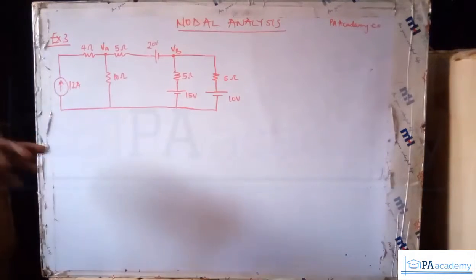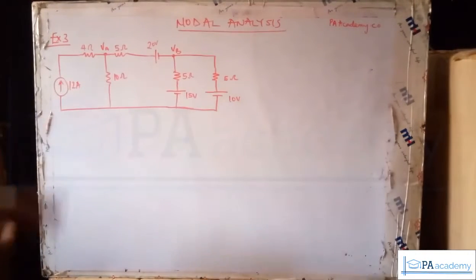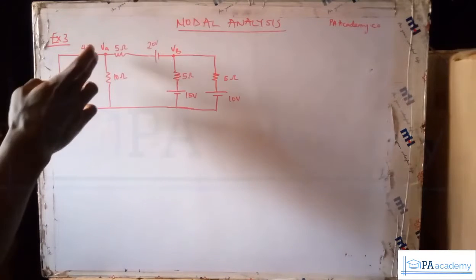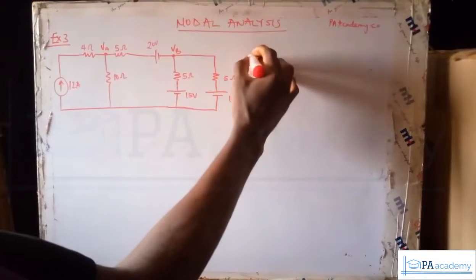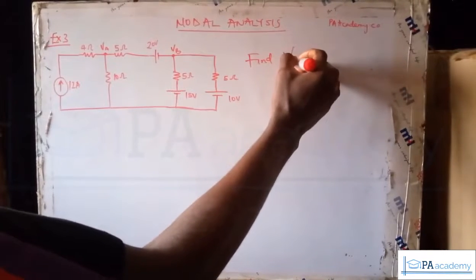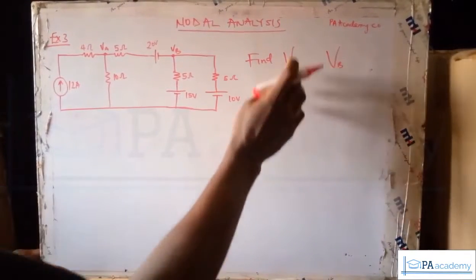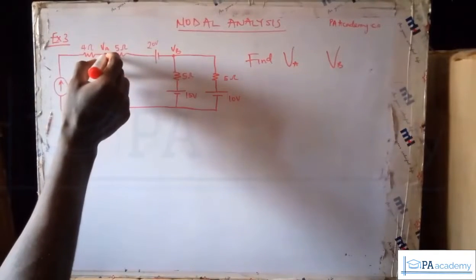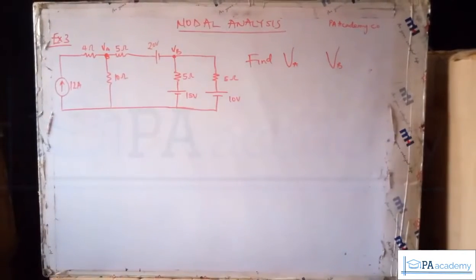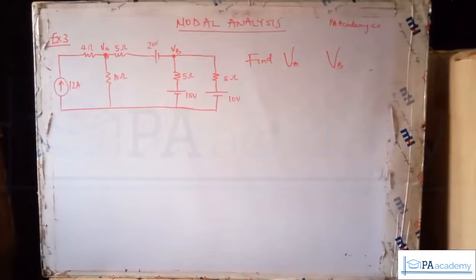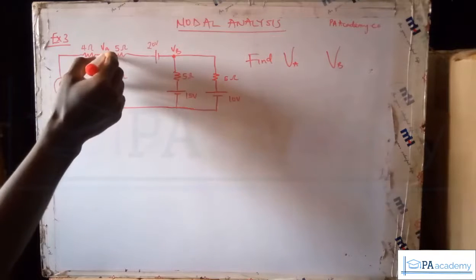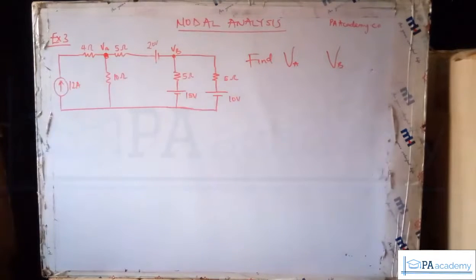Now let's look at this circuit. Unlike the previous examples we looked at where we just had two meshes, now we are having one, two, three nodes and more elements in this particular circuit. What exactly we are looking for is the value of Va and Vb — the voltage at node A and the voltage at node B. Don't forget, a node is a point of connection with three or more elements meeting. If you're unclear on the difference between a node, mesh, loop, and branches, I've done a video explaining those terms.